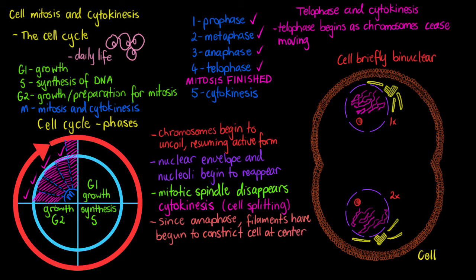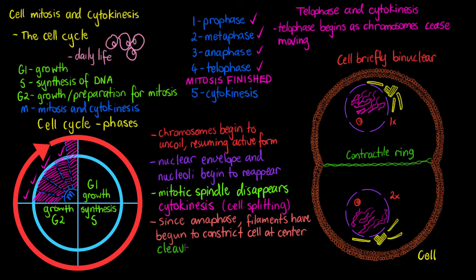This filament framework forms all the way around our cell and slowly constricts it, pinching it closer together at the midline. We have this contractile ring of microfilaments — myosin and actin. The pinching point is called the cleavage furrow; where you can see this indent being formed, we refer to that as the cleavage furrow.